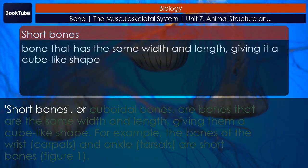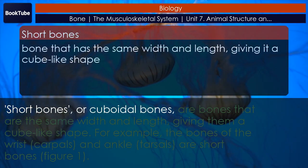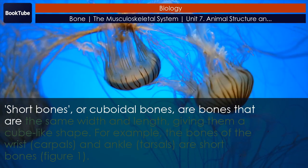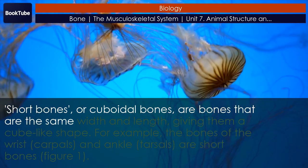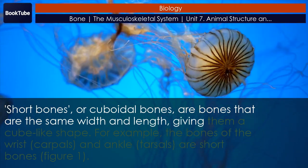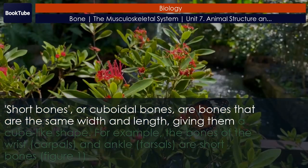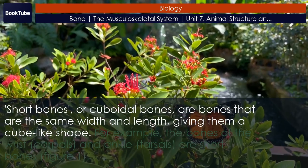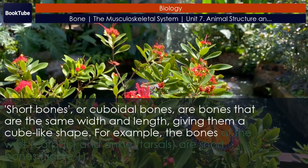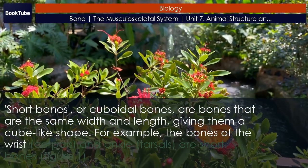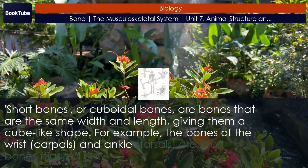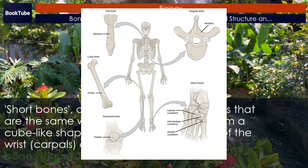Short bones are cuboidal bones — bones that are the same width and length, giving them a cube-like shape. For example, the bones of the wrist (carpals) and ankle (tarsals) are short bones.